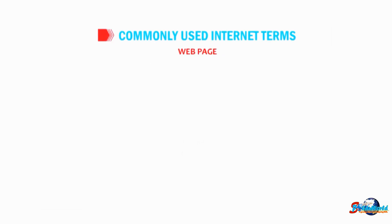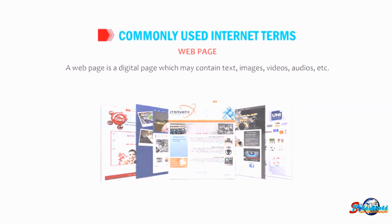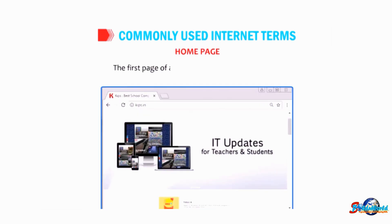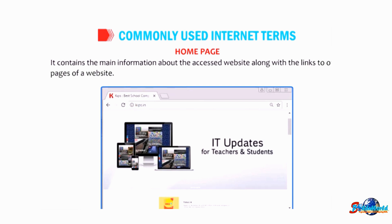A web page is a digital page which may contain text, images, videos, audios, etc. The first page of a website is called the homepage. It contains the main information about the website along with the links to other pages of that website.